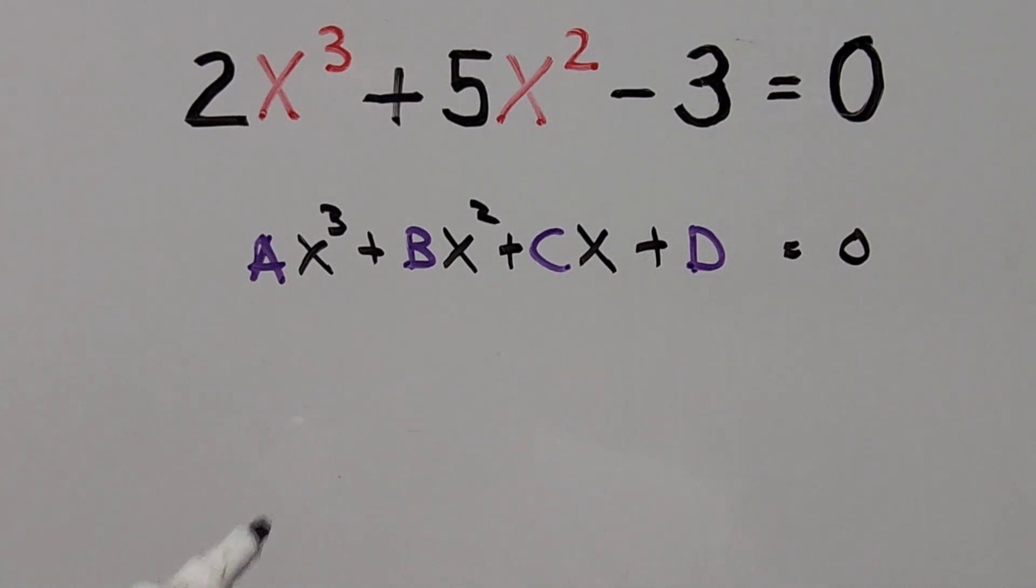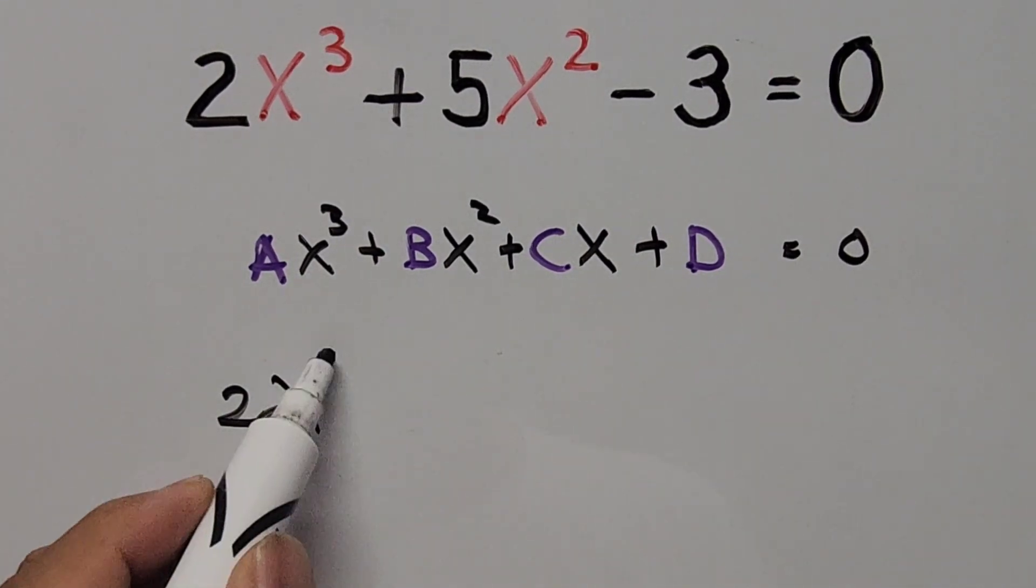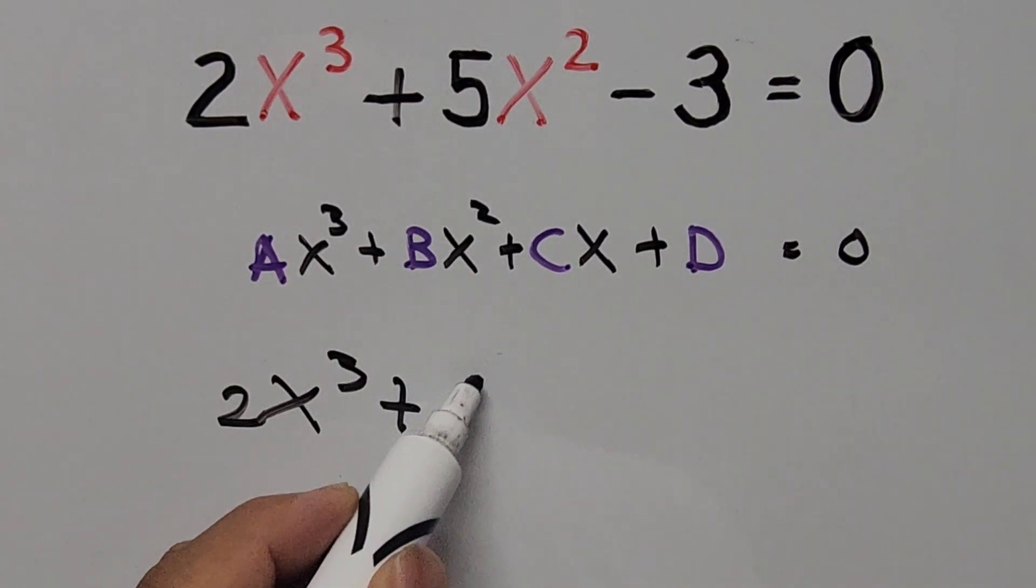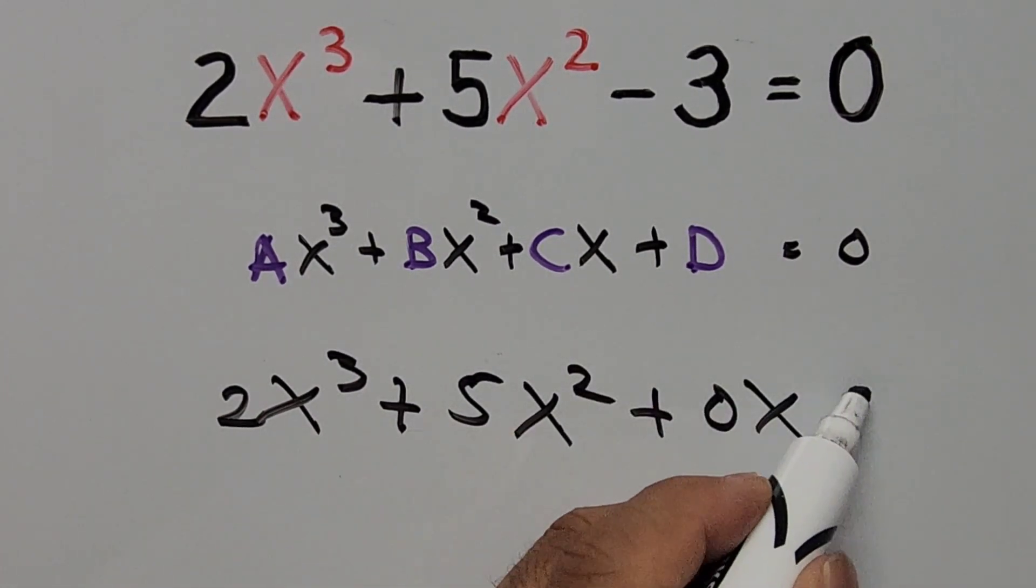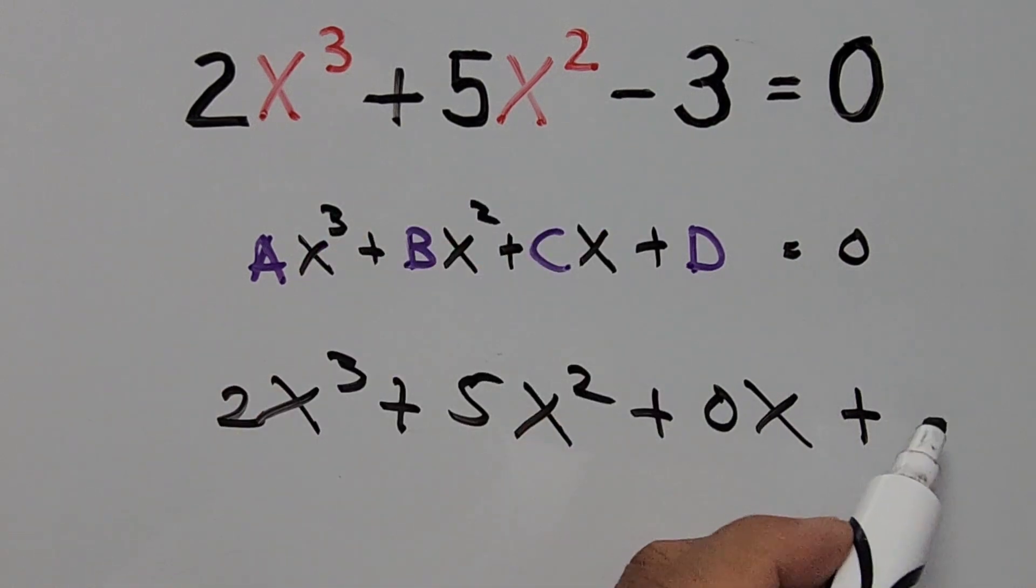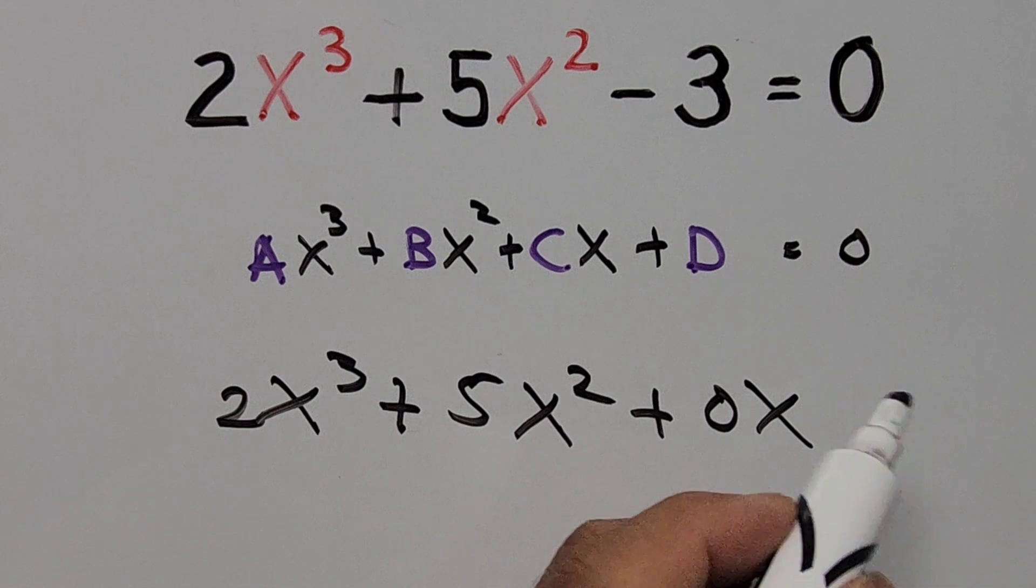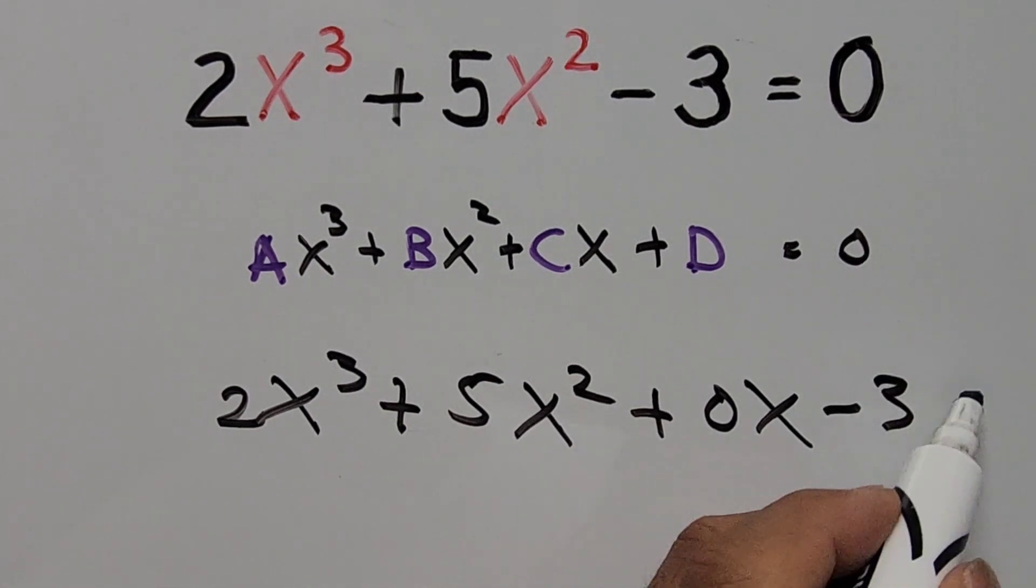So our equation could be written as 2x³ + 5x² + 0x + D. That's D is -3, or let's just do this as -3, equals to 0.